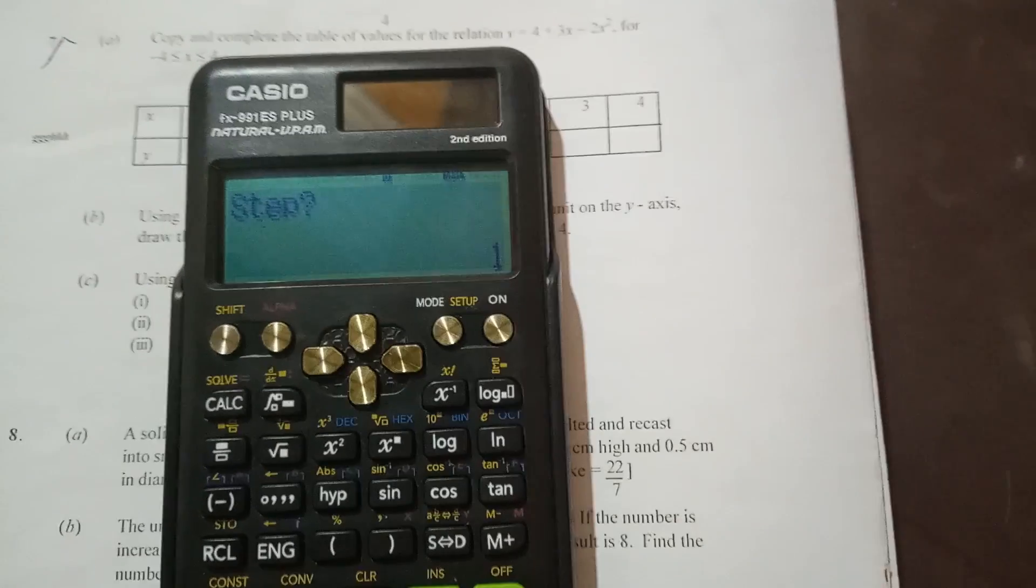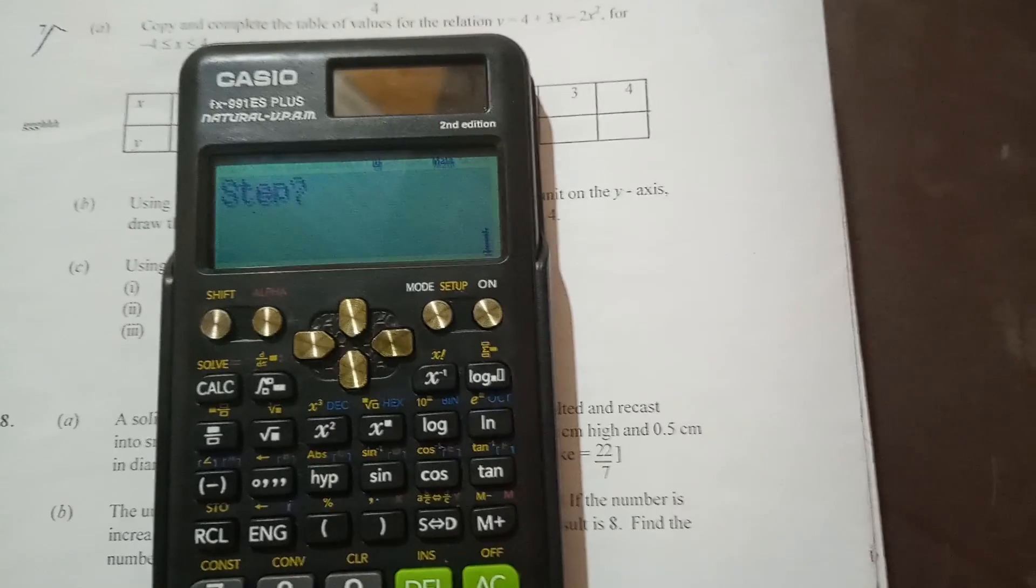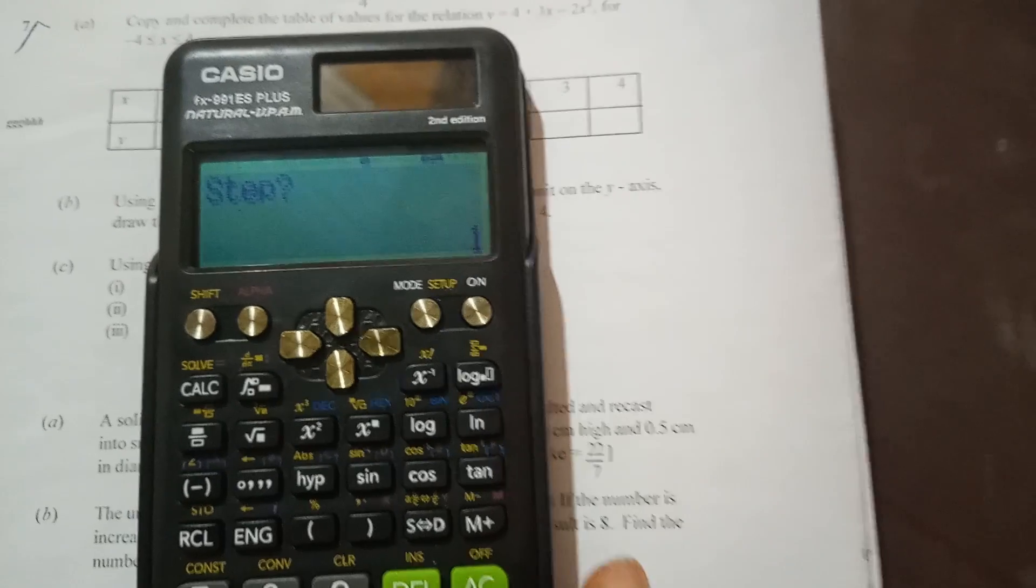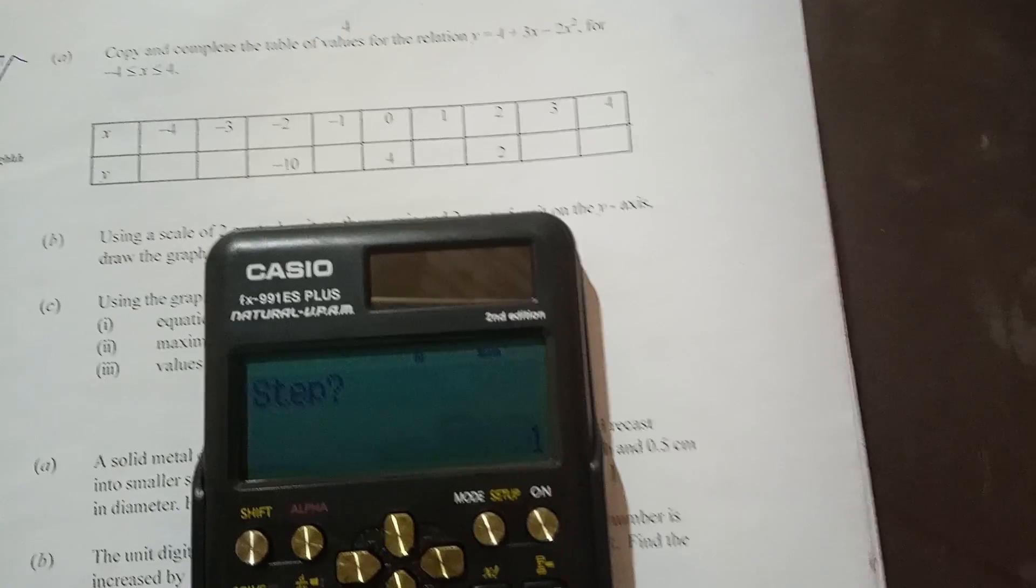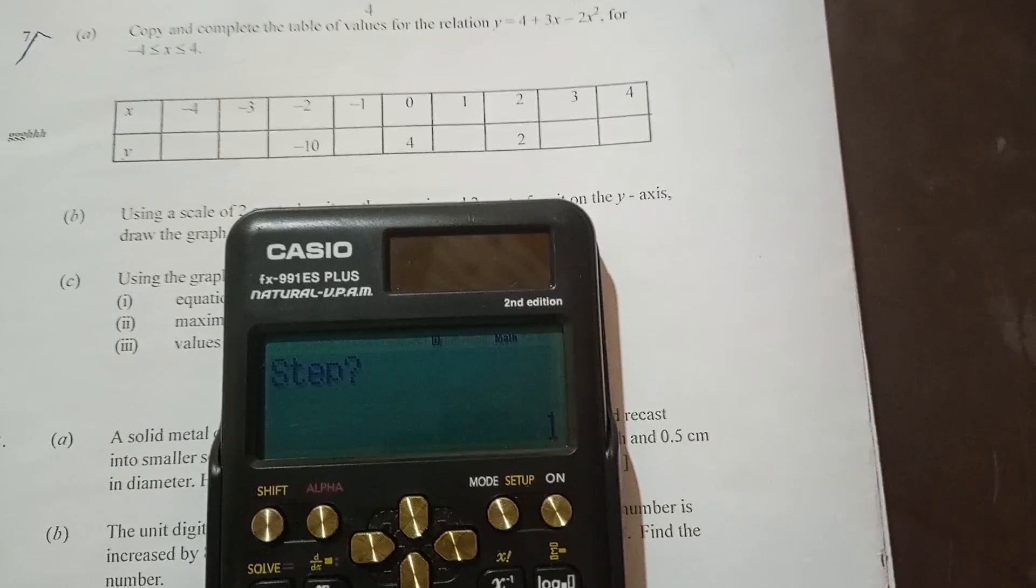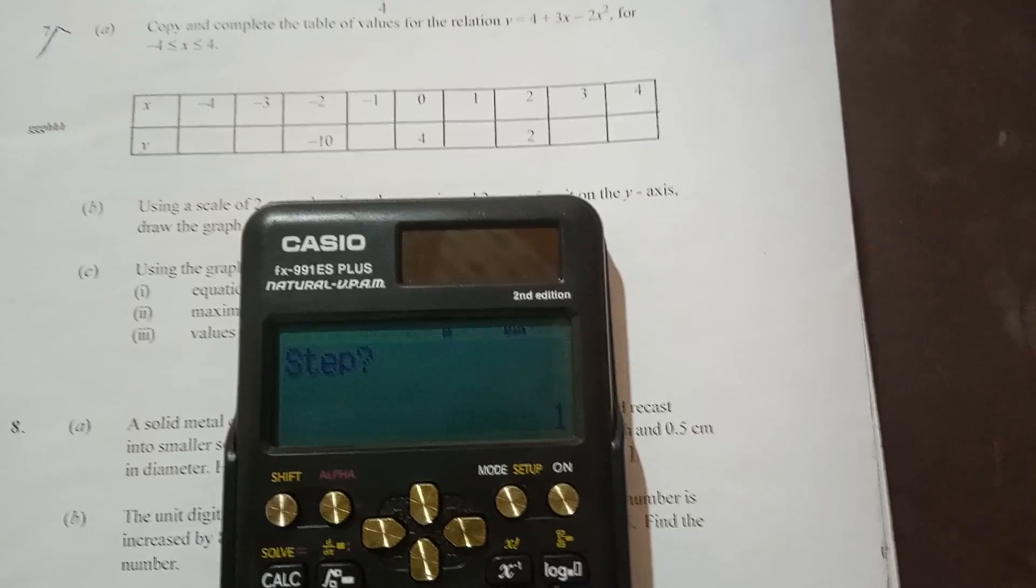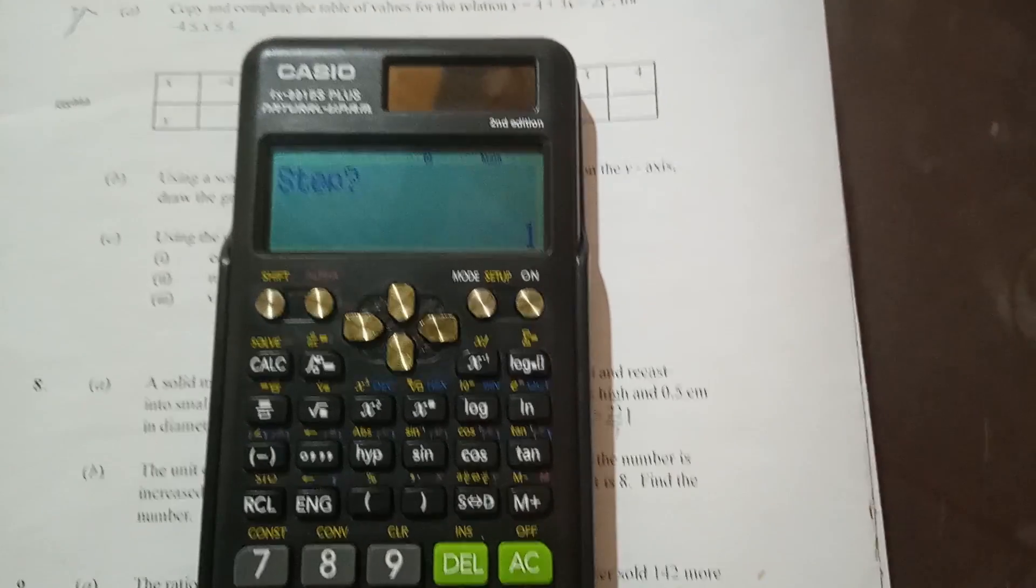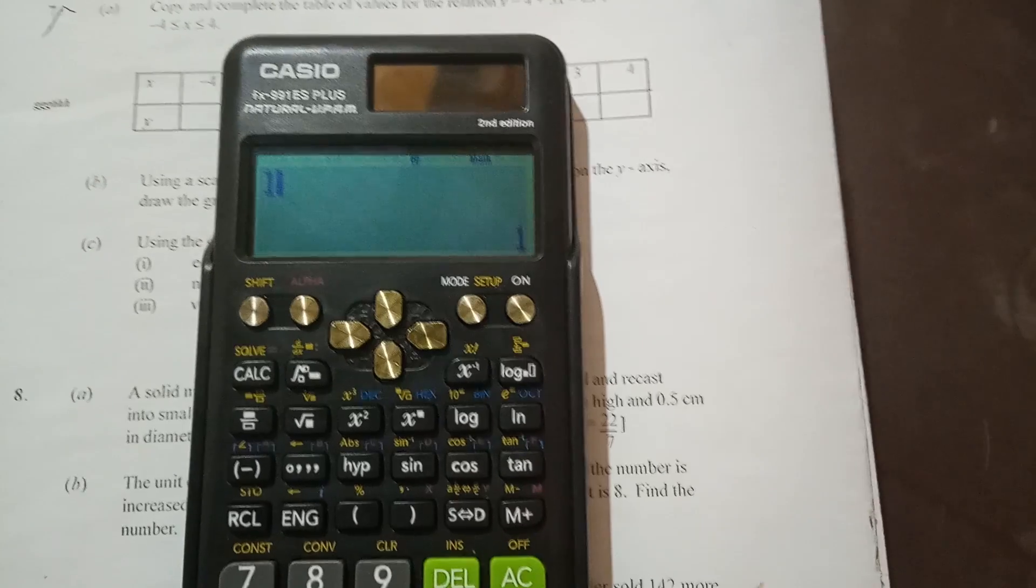Now it is step. Step simply means the intervals between your x values. And as you can see from the table, the interval is positive 1. We go from negative 4 to negative 3, to negative 2, to negative 1, to 0, 1, 2, 3, and 4. That means the interval is 1. So the step is 1. Let's enter 1 and then equal to.